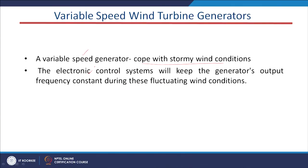The second advantage is that an electronic control system is present here. In case of fixed mode of operation we do not have electronic interfaces, but in case of this variable speed wind system we have these electronic control systems. The electronic interfaces are basically present and this electronic control system will keep the generator's output frequency constant during fluctuating wind conditions.